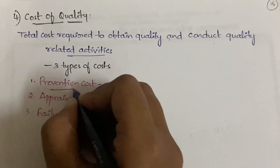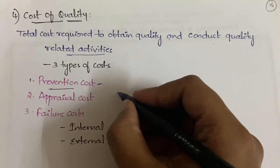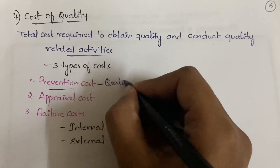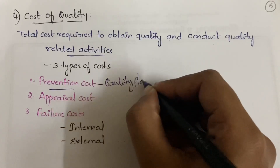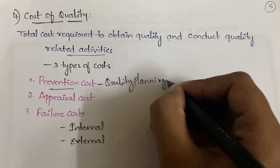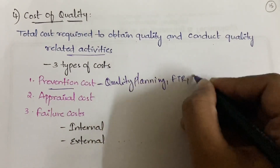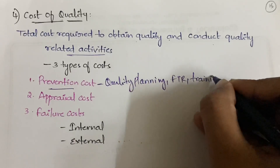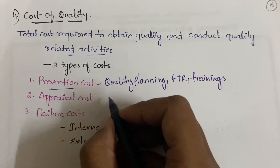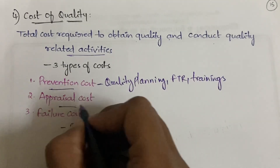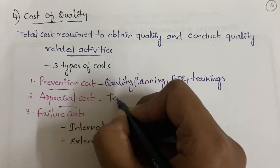Within cost of quality, we have prevention cost. What comes under prevention cost is quality planning, formal technical reviews, and trainings.